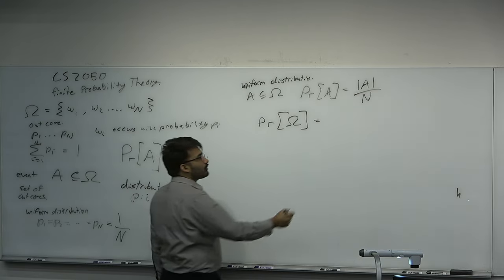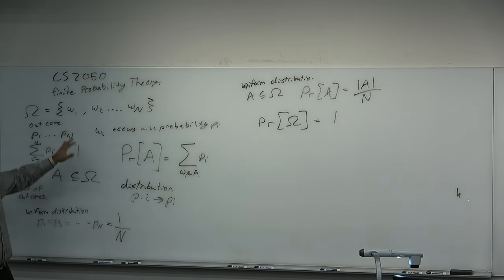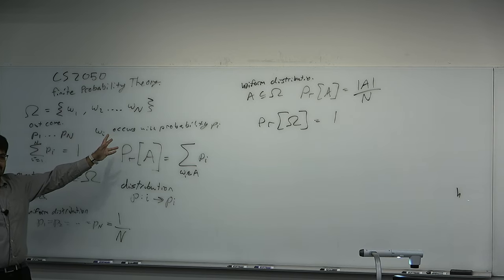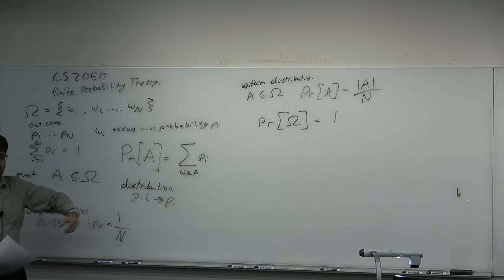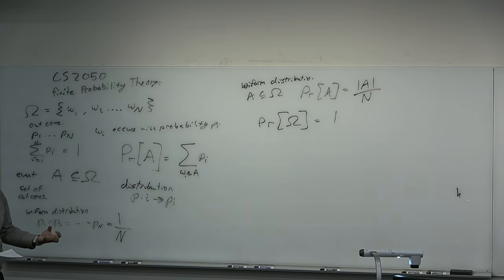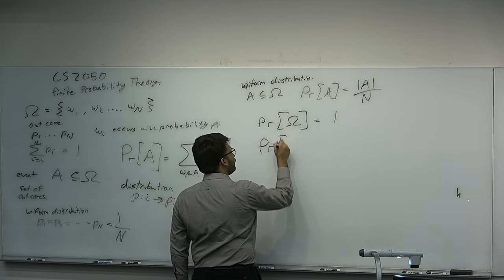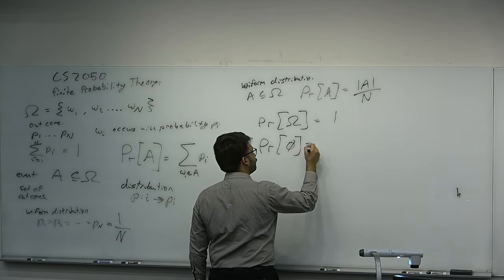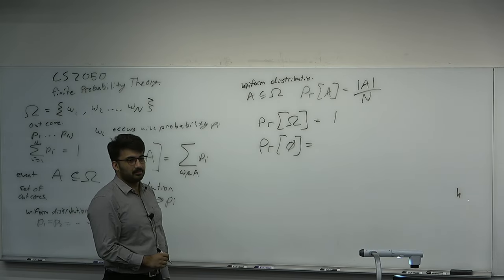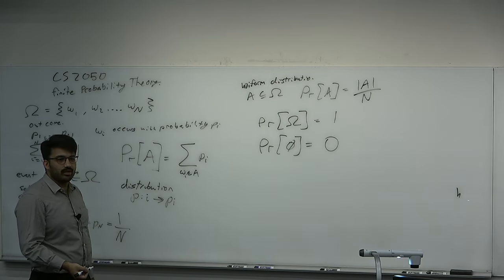Basically, the probability that something happens is 1, because the problem is formulated so that an outcome occurs. The event of omega is everything. It's definitely not less than 1. There is no chance that it doesn't occur. What about the probability that nothing occurs? Zero. These are simple examples, but I'm just showing you that this lines up with our intuition about the way randomness should work.